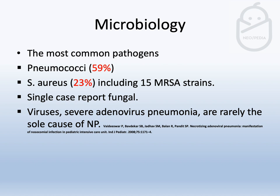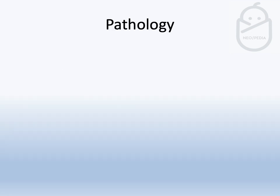The common pathogens are those for community-acquired pneumonia, with nearly two-thirds of cases caused by pneumococci. Staph aureus can cause up to 23%, which can include MRSA strains. There is a single case report of a fungal cause. Severe adenovirus pneumonia can be rarely associated or be a sole cause, however viral pathogens are thought to contribute mainly by complicating bacterial causes.